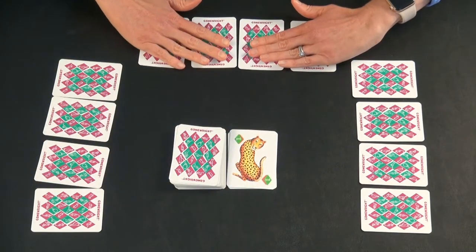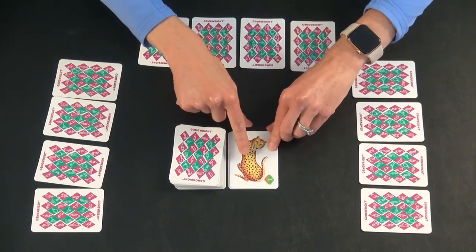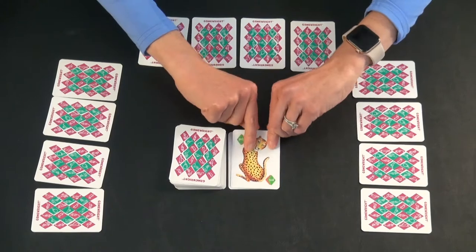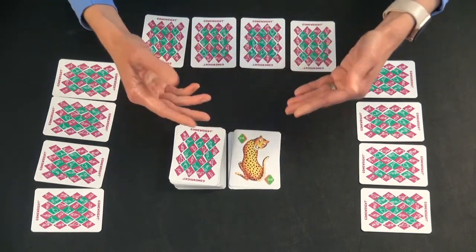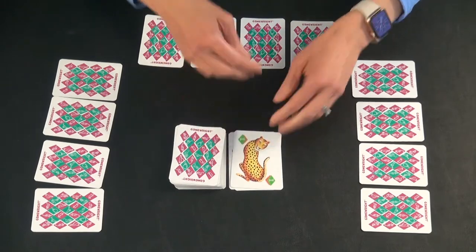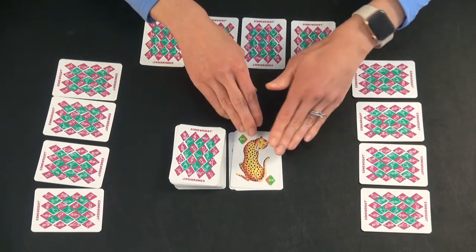Now on this person's turn, you cannot draw a power card from the discard pile and use it for its power. You can draw any card you want from the discard pile and replace a card over here with it.